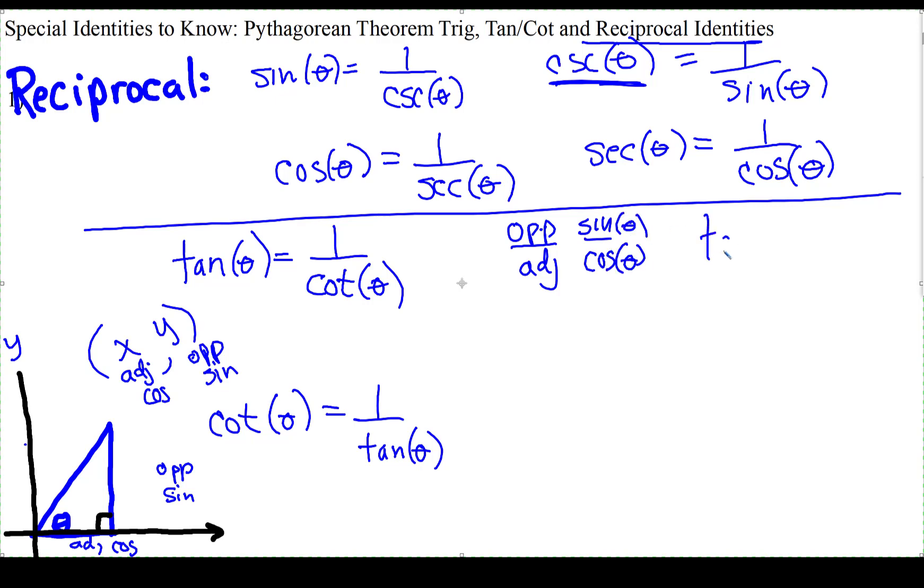So this opposite over adjacent is also sine over cosine. So tangent theta is sine theta over cosine theta. Very important to remember.